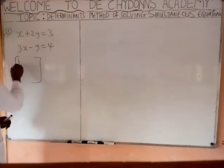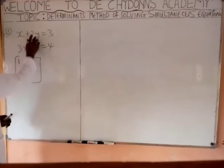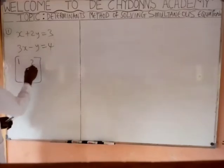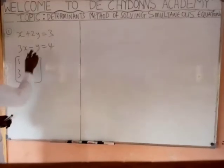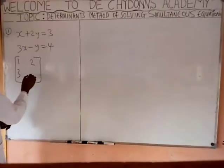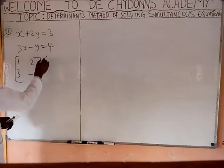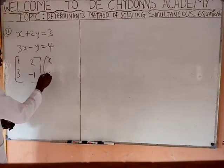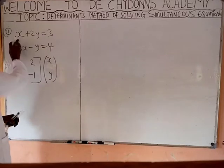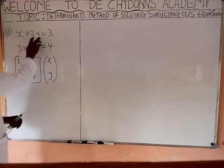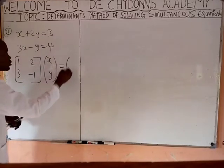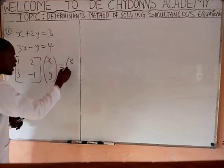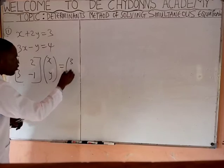Coefficient of X: 1. Coefficient of Y: 2. Coefficient of X: 3. Coefficient of Y: minus 1. We have two unknowns, X and Y. Because X comes first before Y, the right-hand side values are 3 and 4.